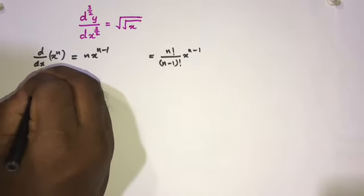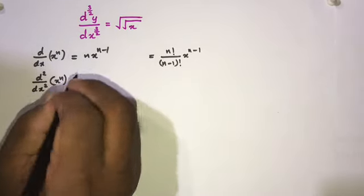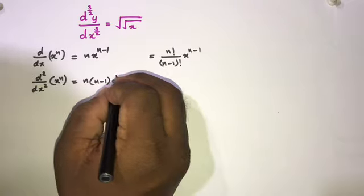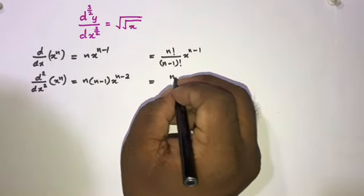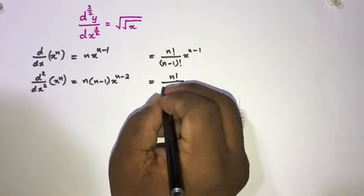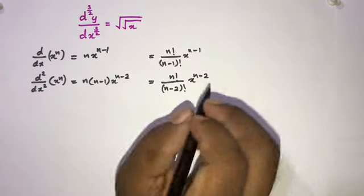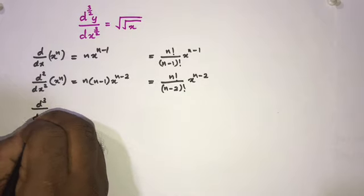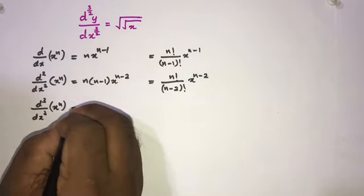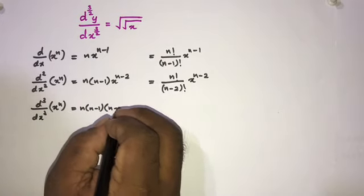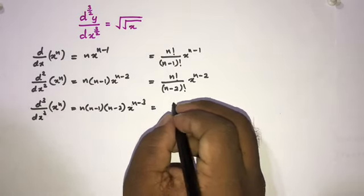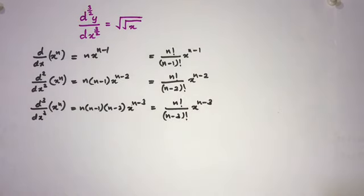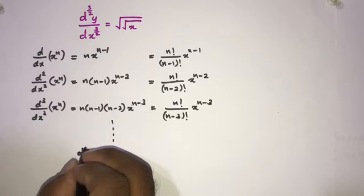Now we take the second derivative: d²/dx²(x^n) = n(n-1)·x^(n-2), which equals n!/(n-2)! · x^(n-2). Taking the third derivative: d³/dx³(x^n) = n(n-1)(n-2)·x^(n-3) = n!/(n-3)! · x^(n-3).